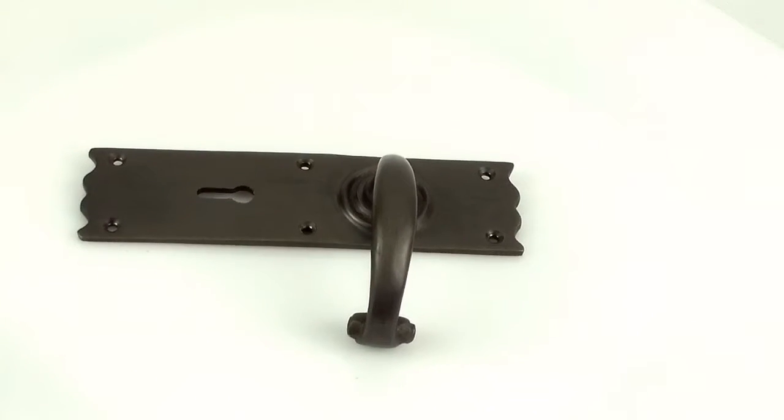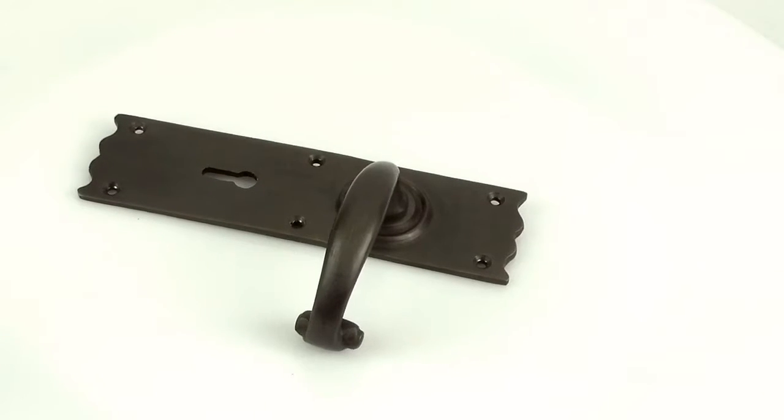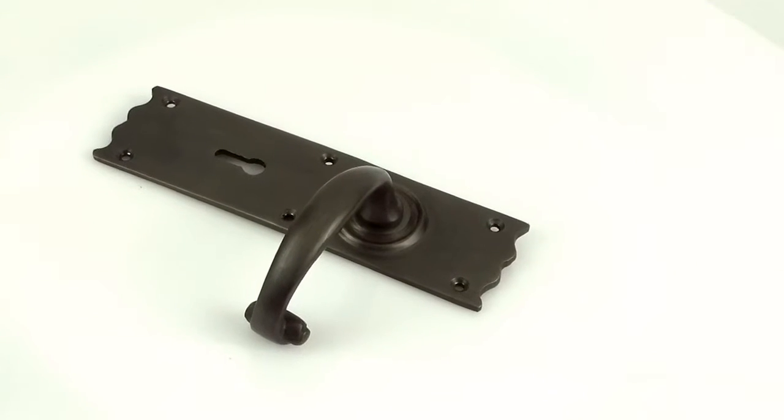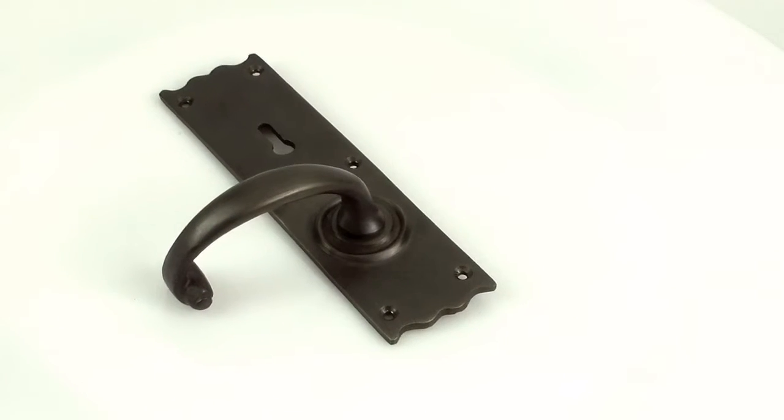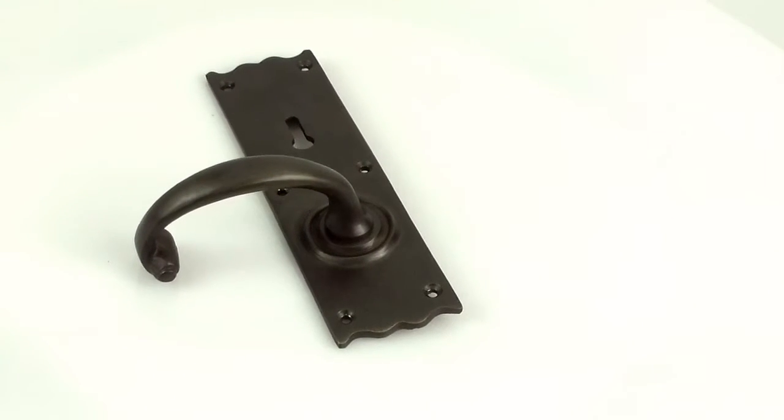Croft make over 25 different finishes, so this very same door handle can be finished in chrome, brass, nickel, oil rubbed bronze and many other finishes. They do take about six weeks to be made because of this and because they're all handmade.